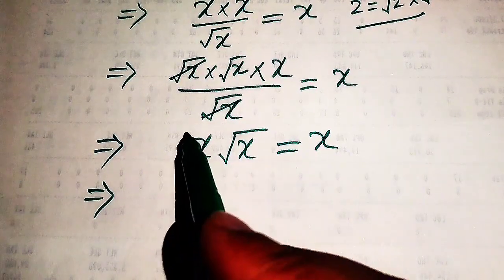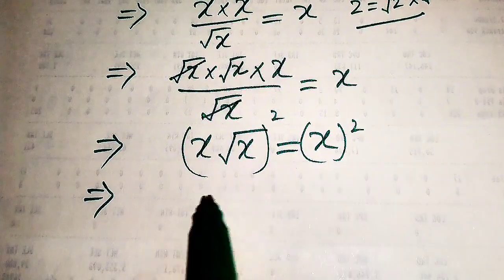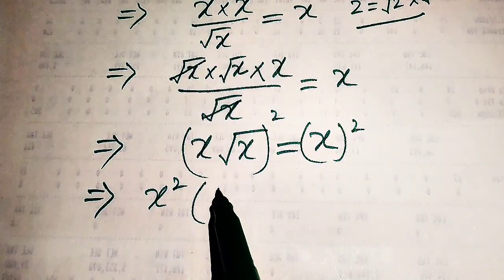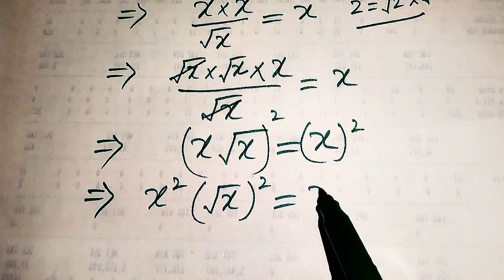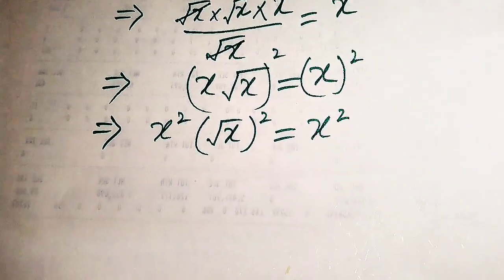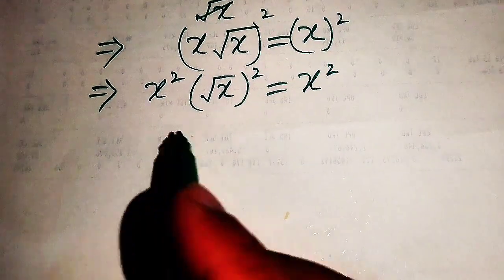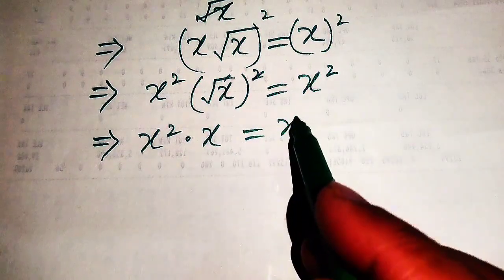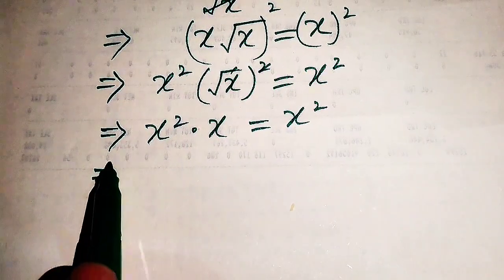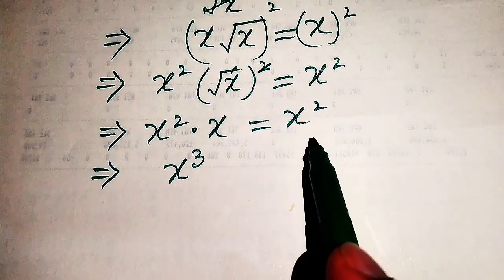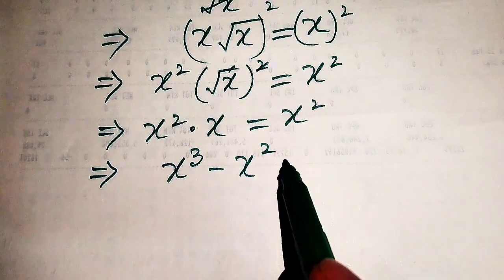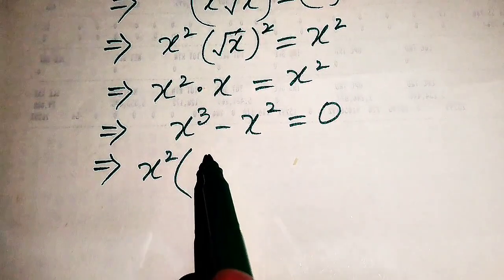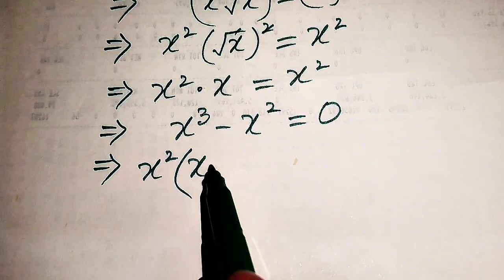To find the values of x, we square both sides. Applying the square sign separately on both values gives (x)²·(√x)² equals x², which simplifies to x² times x equals x², giving x³ equals x². Moving x² to the left hand side gives x³ minus x² equals 0.